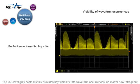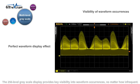The 256-level grayscale display provides key visibility into waveform occurrences, no matter how infrequent.